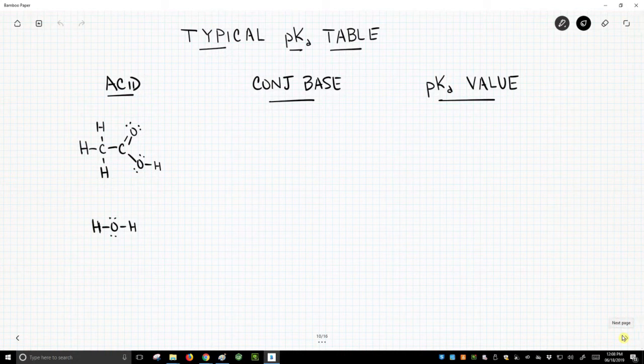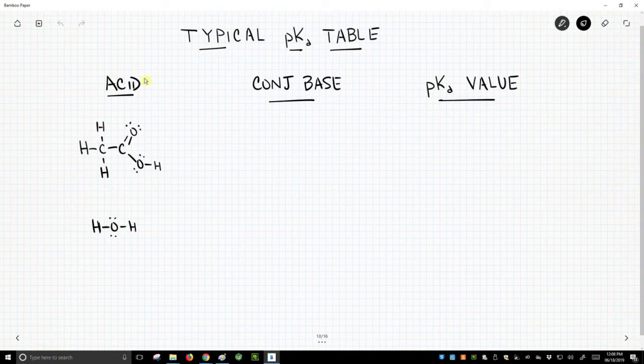On the screen, we have three columns, and this is supposed to imitate a pKa table. Typically, the pKa table will start with the leftmost column. It will show the structure of the acid that you're looking at, and so we have this molecule right here.